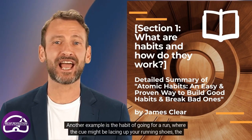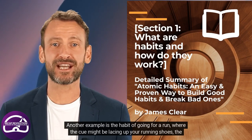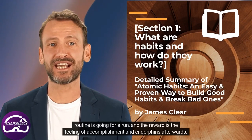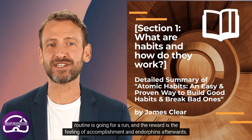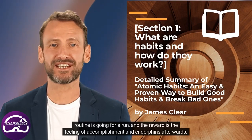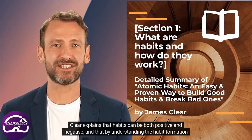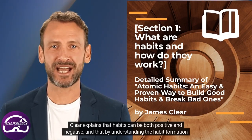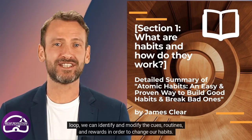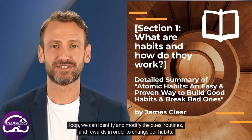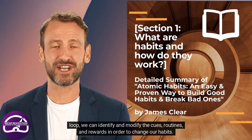Another example is the habit of going for a run, where the cue might be lacing up your running shoes, the routine is going for a run, and the reward is the feeling of accomplishment and endorphins afterwards. Clear explains that habits can be both positive and negative, and that by understanding the habit formation loop, we can identify and modify the cues, routines, and rewards in order to change our habits.